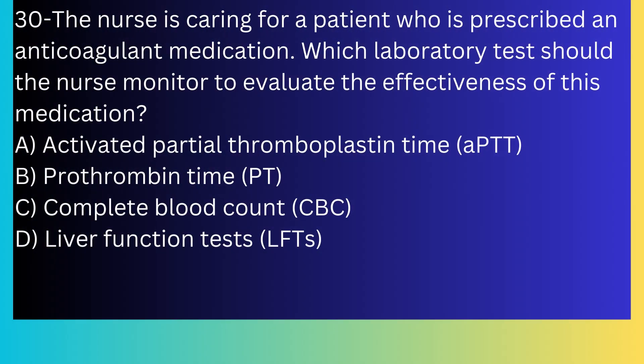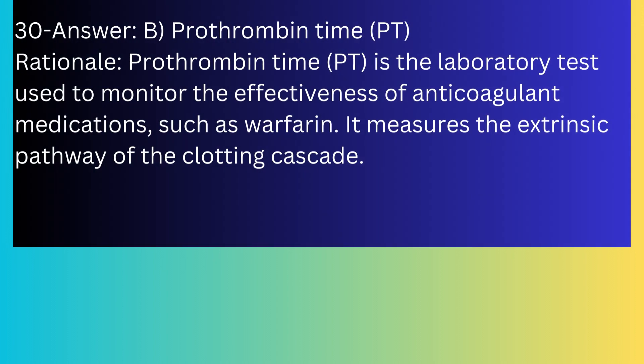Question number thirty: The nurse is caring for a patient who is prescribed an anticoagulant medication. Which laboratory test should the nurse monitor to evaluate the effectiveness of this medication? A) Activated partial thromboplastin time (aPTT), B) Prothrombin time (PT), C) Complete blood count, D) Liver function tests. The answer is B, prothrombin time (PT). PT is the laboratory test used to monitor the effectiveness of anticoagulant medications such as warfarin; it measures the extrinsic pathway of the clotting cascade.